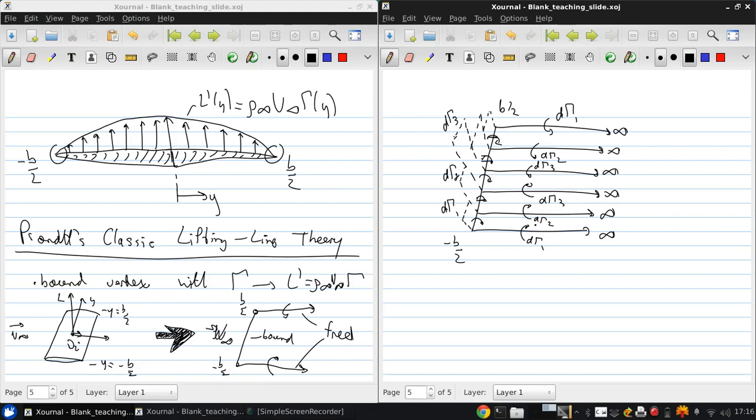All of these collinear bound vortices are attached along what we call the lifting line, which is where the name of this model comes from. As you can see, the circulation varies along this. Note that the strength of the trailing vortices is equal to the change in circulation along the lifting line.